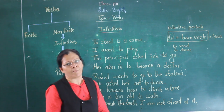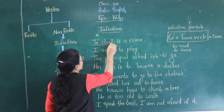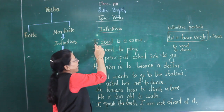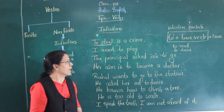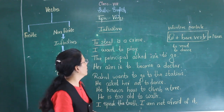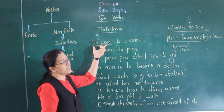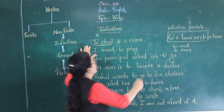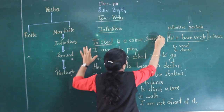Example one: 'To steal is a crime.' Here, 'to steal' is our infinitive. 'Steal' is a verb, and we have added the word 'to' before it, so it becomes an infinitive. 'Is' is the verb, and 'to steal' acts as the subject of the verb.